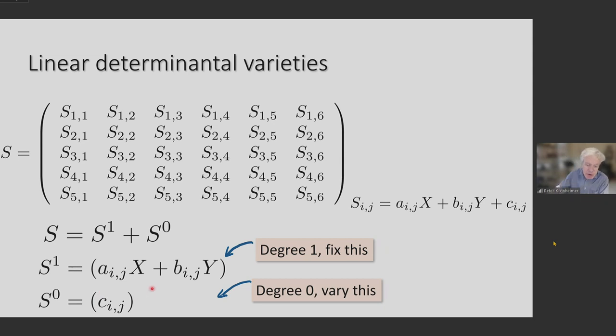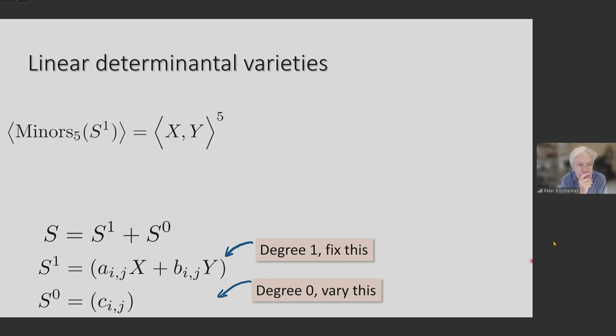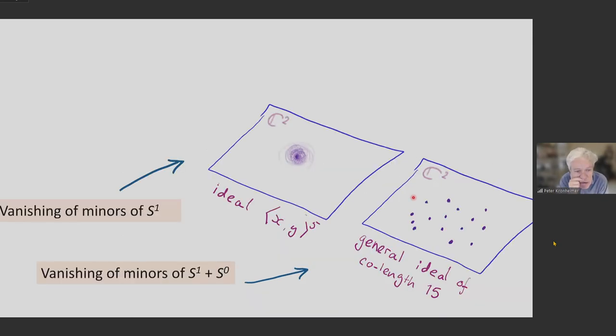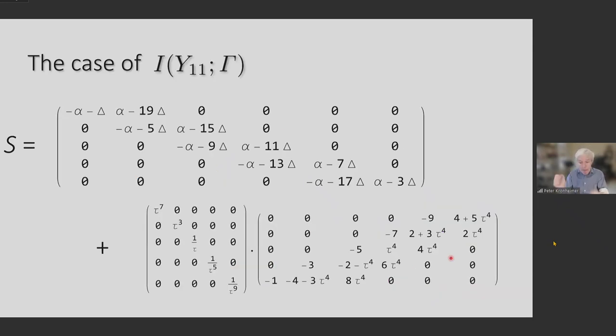So for each choice of A, B, and C, I get some configuration of points in the plane, say 15 points. And as I vary C, these points will move around in the plane. The minors of S1 itself, when all the Cs are zero, that turns out just to be, at least for generic choice of A's and B's, that's just the maximal ideal fifth power. That's just the blob at the origin, the fourth infinitesimal neighborhood of zero. I add these zeroth order terms, the Cij, and I get a general element in some open neighborhood in the Hilbert scheme. Let's see, here it is pictorial. This is the vanishing of the minors of the homogeneous matrix. This is the vanishing of the minors of S1 plus S0. And as I vary S0, these points will move around.